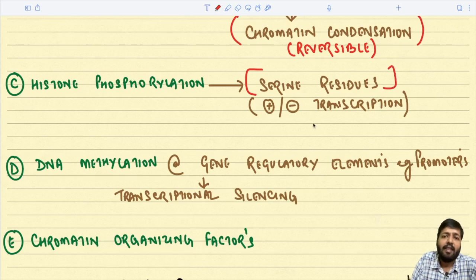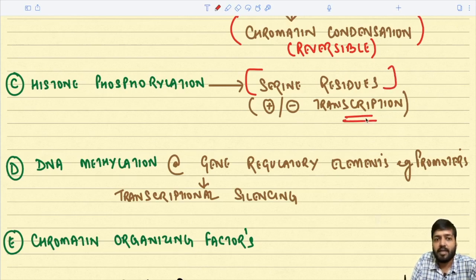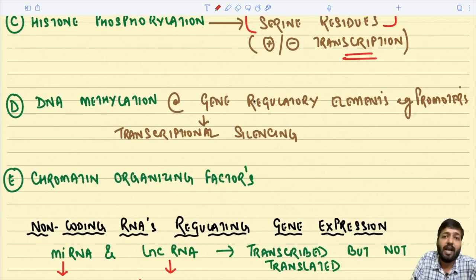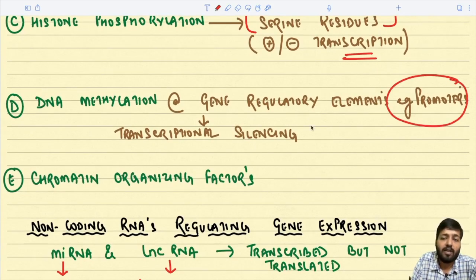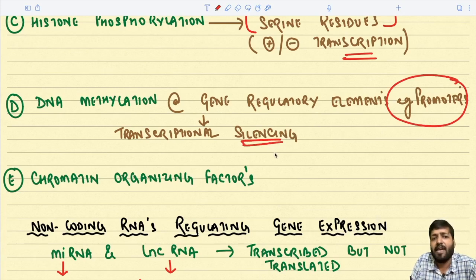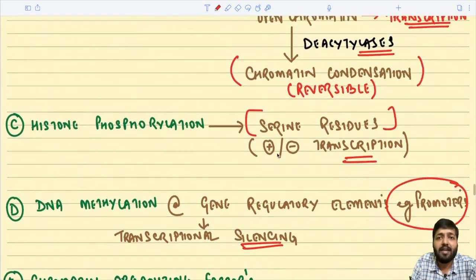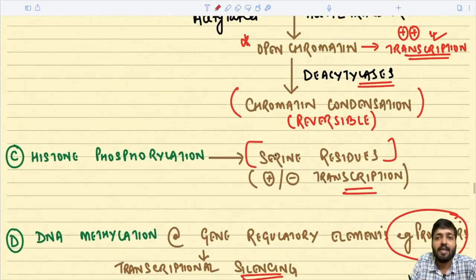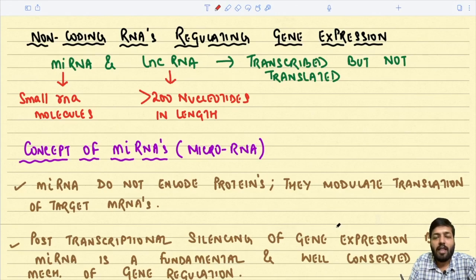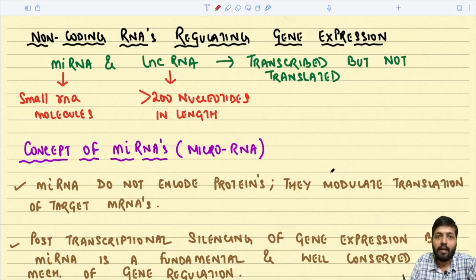Histone phosphorylation involves the serine residues and may either stimulate or inhibit transcription. DNA methylation at gene regulatory elements — for example at promoter areas — can lead to transcriptional silencing. There are also chromatin organizing factors. With this, we have completed the histone modification details.